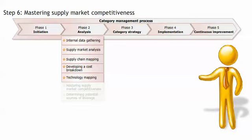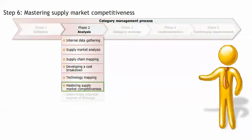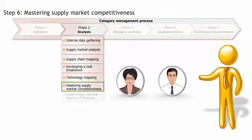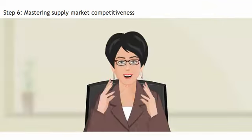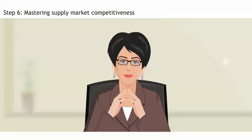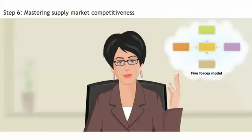In step six, the team will work on mastering the supply market competitiveness. Anna explains to Daniel: in this step, you can use Michael Porter's five forces model to determine the competitiveness within a specific category.